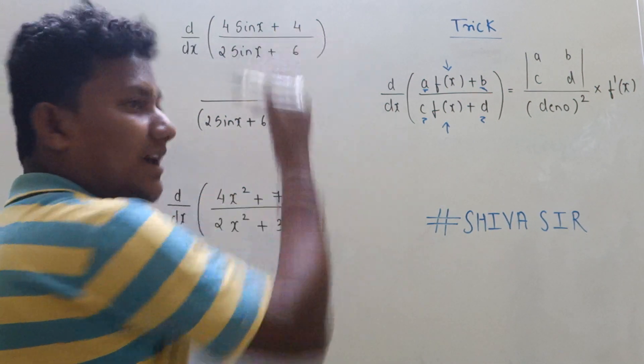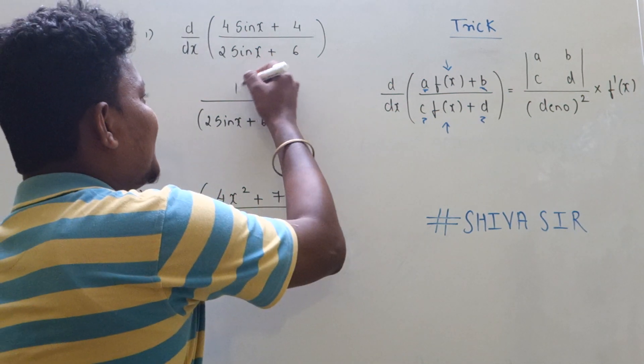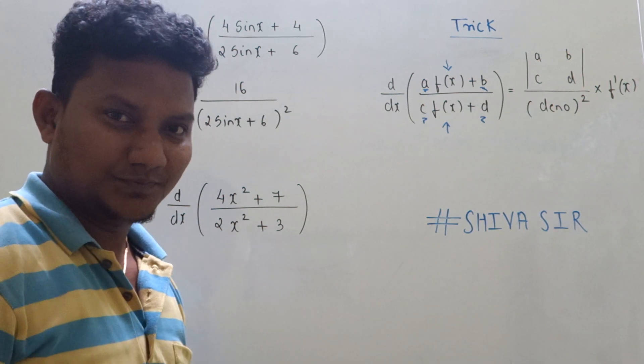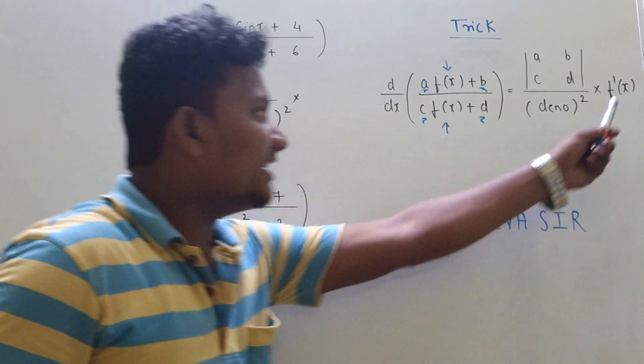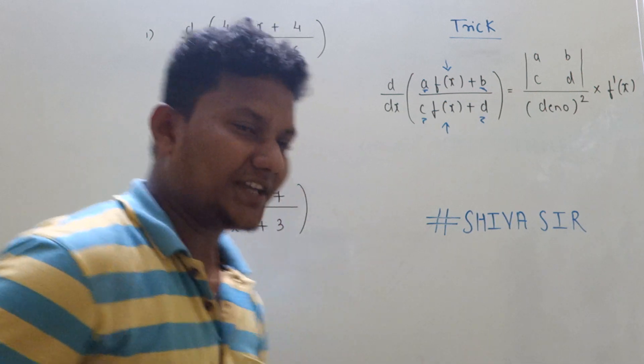24 minus 8 is 16. And also you might be knowing how to find the determinant for 2×2, okay? The next step is: you will find the derivative of that function.